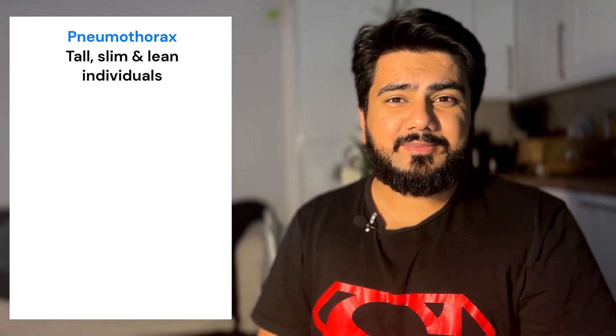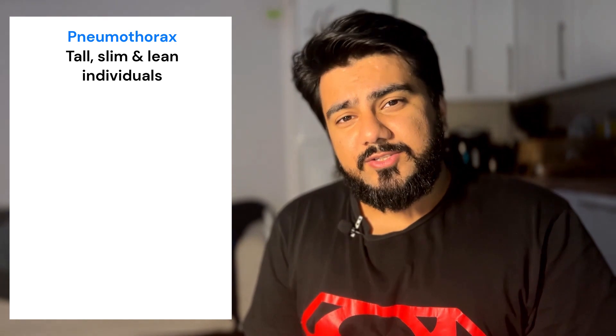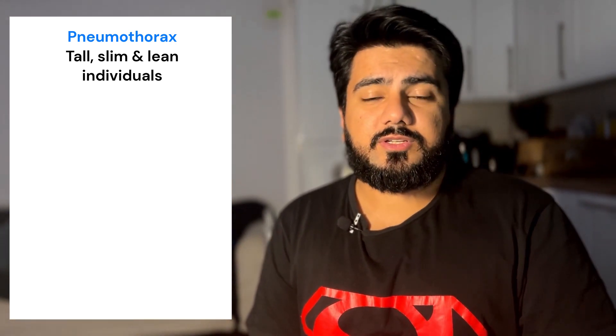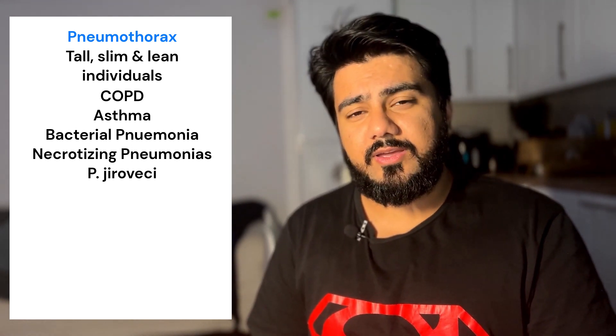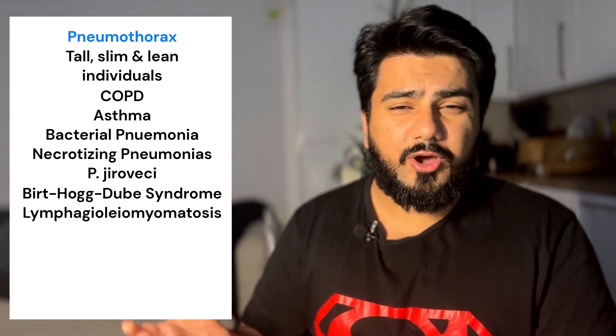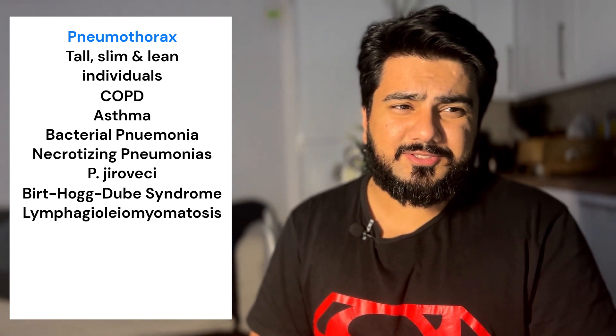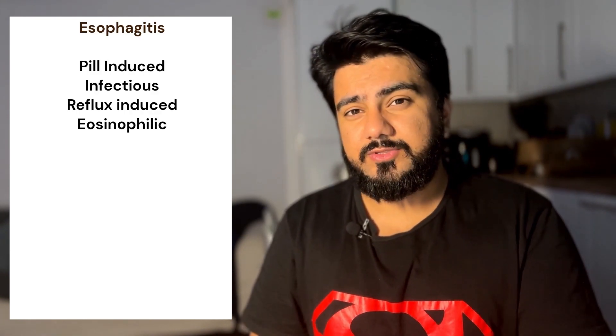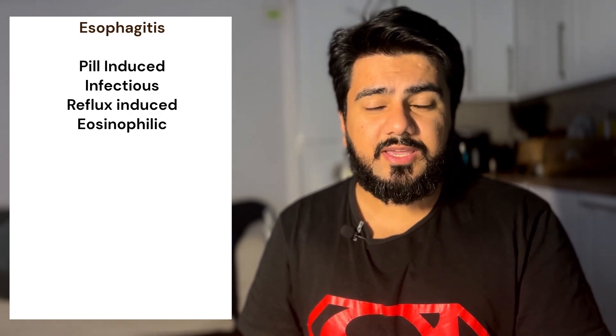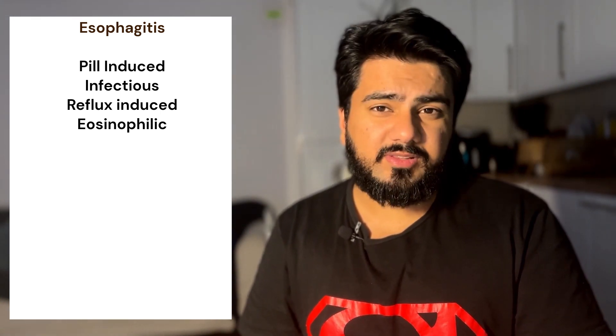For pneumothorax, a primary pneumothorax tends to occur in tall, thin, slim, and lean patients. Secondary pneumothoraxes can happen due to COPD, asthma, bacterial pneumonia, necrotizing pneumonias, Pneumocystis jirovecii, and rarer conditions such as Birt-Hogg-Dubé syndrome and lymphangioleiomyomatosis. Risk factors for esophageal rupture include the various types of esophagitis: pill-induced esophagitis, reflux esophagitis, infectious esophagitis, and eosinophilic esophagitis.